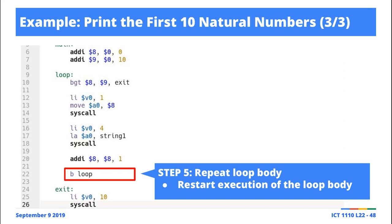So, it's like, go back to the label loop. Once you execute this, go back to the label loop. Once you execute this, go back. You're repeating.